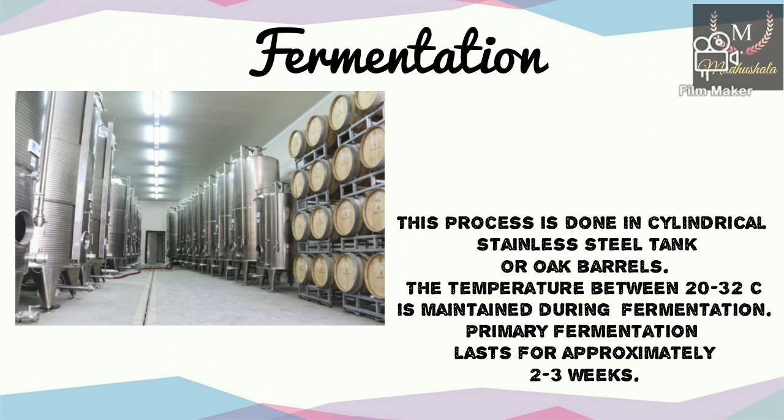The grape juice going for fermentation is called must. The must is then passed into stainless steel fermentation tanks or oak barrels through pipes. Depending on the winemaker, yeast inoculation can be added to the must, or fermentation can start with the natural yeast present on the grape skins. Fermentation is a highly controlled process carried out in a sterile environment. The primary fermentation lasts two to three weeks, in which sugars present in the must are converted to alcohol and carbon dioxide. The fermentation temperature for red wine ranges from 24 to 32 degrees centigrade. Red wine gets its color from the grape skin, which is why fermentation is done with skin contact.